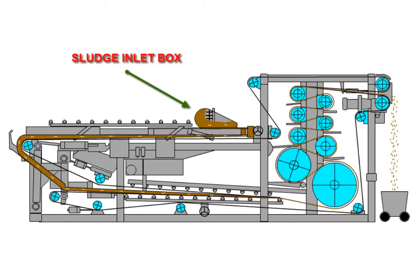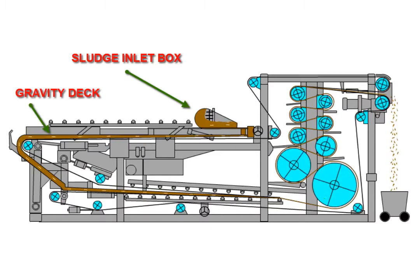Wet sludge enters onto the press through a sludge inlet box where it is gently dispersed and spread evenly. Sludge is spread evenly along the gravity deck by a sludge leveling bar and passes through a series of flows, aligning the sludge into rows allowing the free water to cascade off the sludge through the belt.